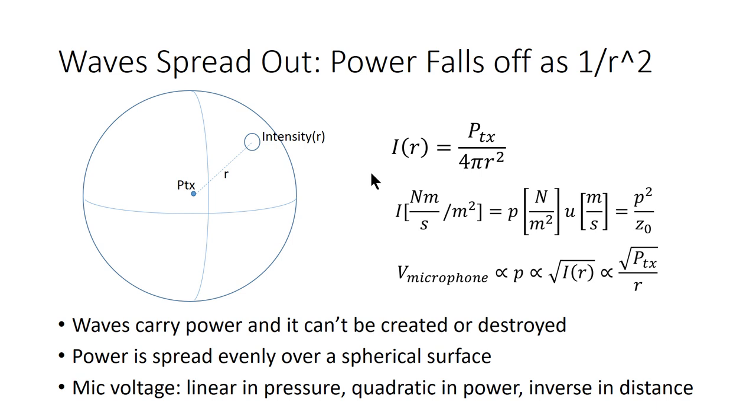So the big takeaway from this analysis is that your microphone voltage is proportional to the square root of your transmit power, and it's inversely proportional to the range that you are away from your transmitter. So in general, you'd expect an Rx power, a received power versus range curve, to look like 1/x.